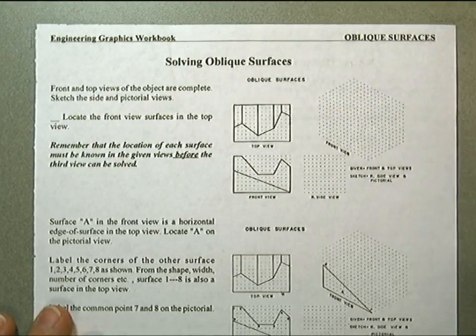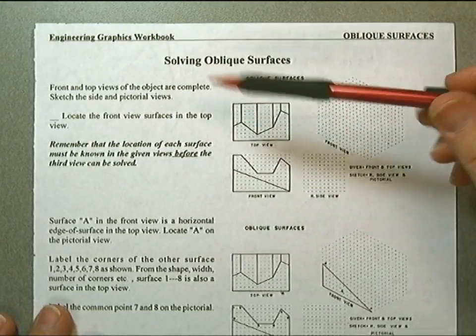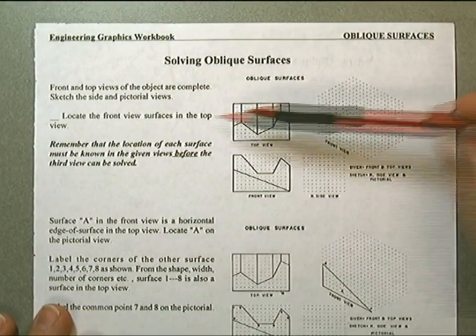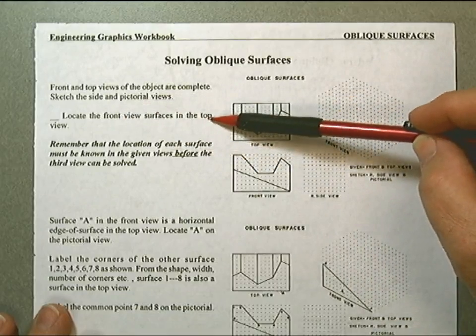So let's begin solving oblique surfaces. Front and top views of the object are complete. Locate the front view surfaces in the top view.